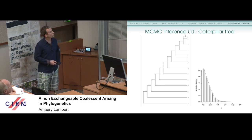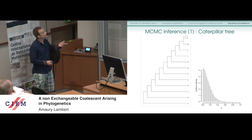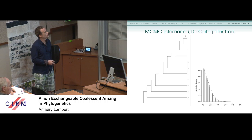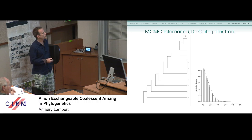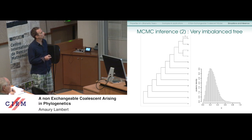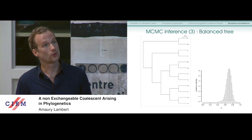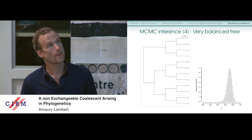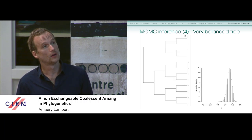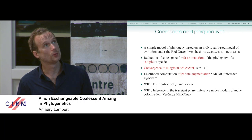We performed inference augmenting with weights or with levels when alpha is not too small. When you take a caterpillar tree, you get a posterior distribution of alpha concentrated near zero. When you introduce a little balance, alpha already shifts to the right. And for a perfectly balanced tree, you get an alpha close to one. So we have a process that interpolates between the Kingman coalescent and the caterpillar tree.